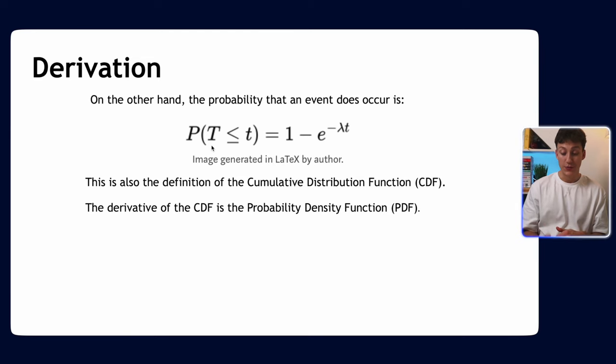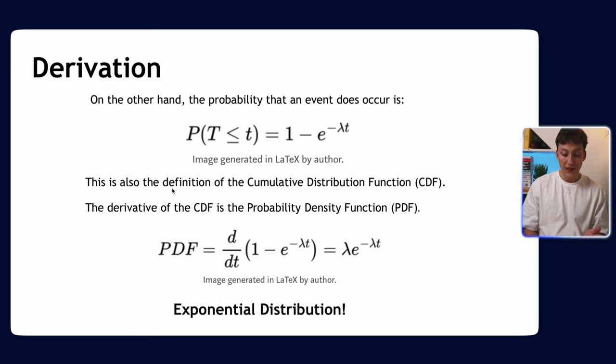A common result in statistics is that the derivative of the CDF is the PDF, the probability density function. So by deriving it, we get the exponential distribution: lambda e to the minus lambda t. There we go—we've derived the exponential distribution PDF from first principles from the Poisson distribution. It was that easy, it took us like four or five equations. If you're unsure about this process, rewind the video and go over it slowly.